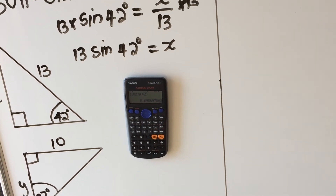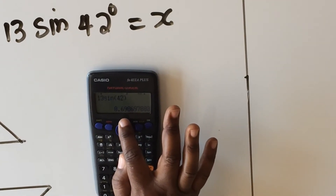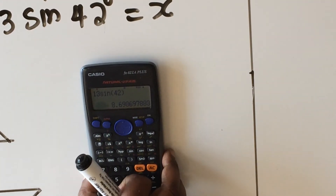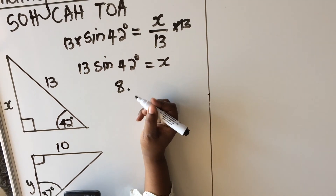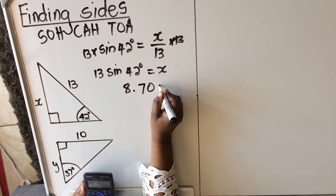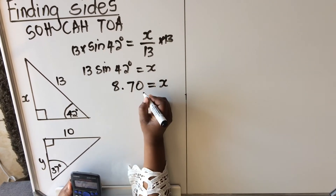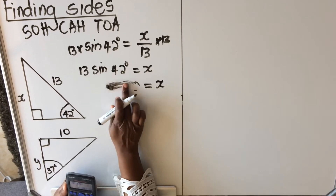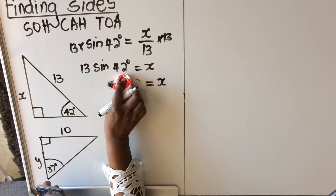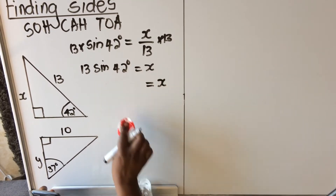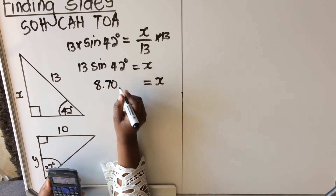The calculator gives 8.69. Rounding to two decimal places, x = 8.70 units. If no units are given in the question, just write 'units.' If the question specifies meters, write meters. So x = 8.70 units.